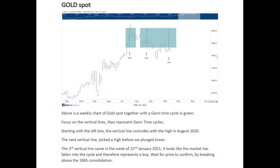From an Elliott Wave point of view, this whole correction looks corrective in nature, but where we stand right now we would certainly like price to confirm that the cycle was a low. So watch that 1865 area — if we can start to move above that, that will be a good sign. The next area to obviously look for is around about the 1925 to 1930 area.